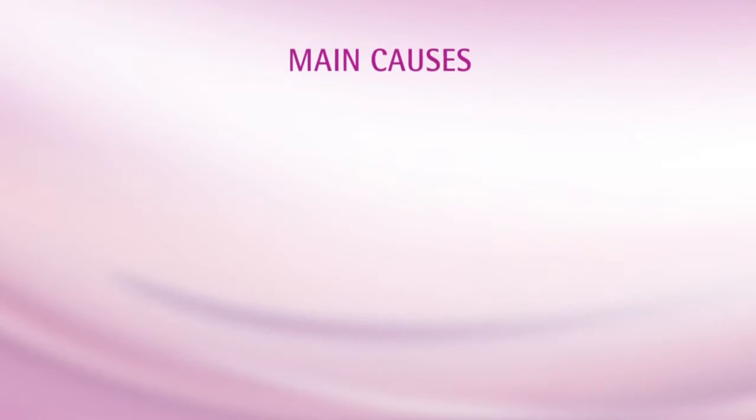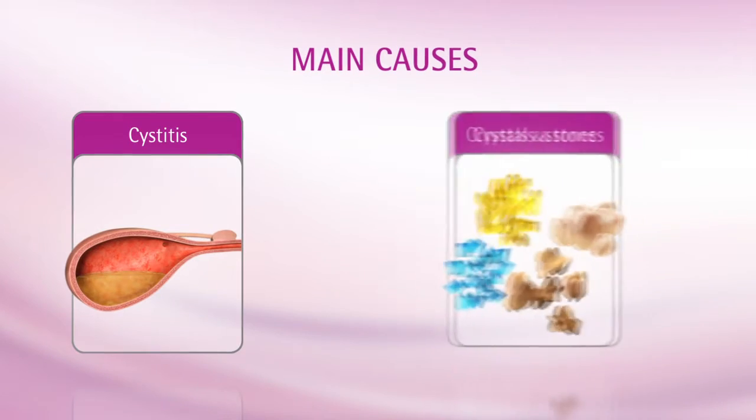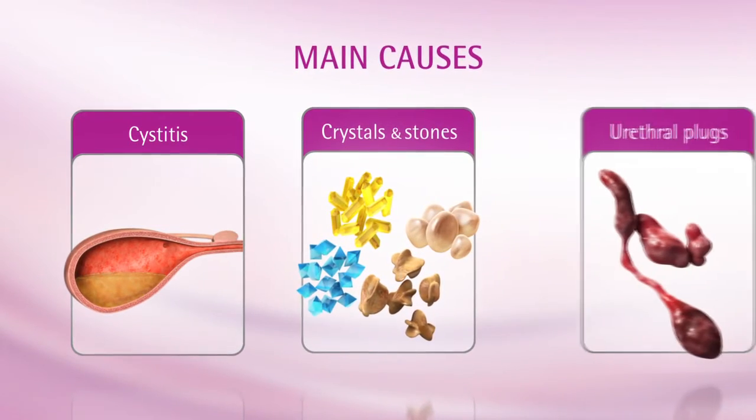There are three main causes of urinary conditions: cystitis, crystals and stones, and urethral plugs.